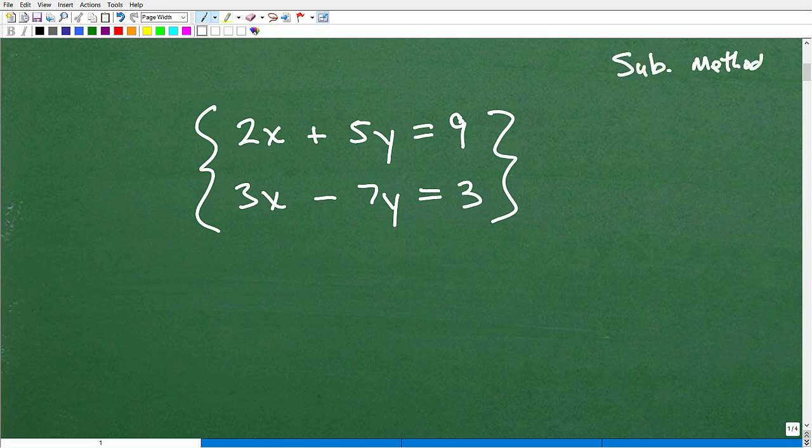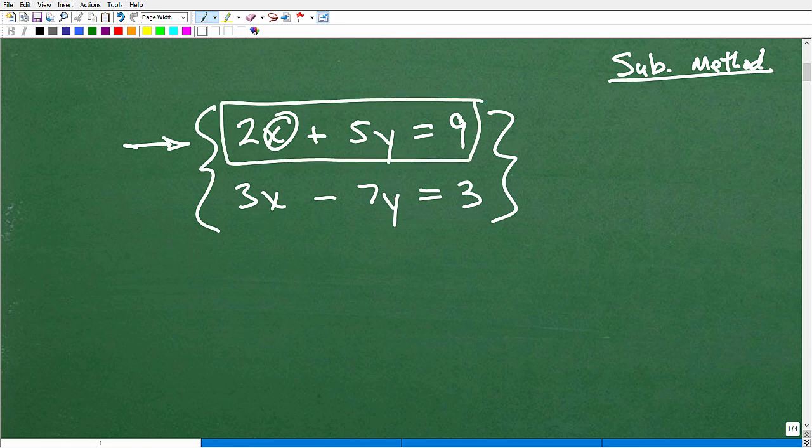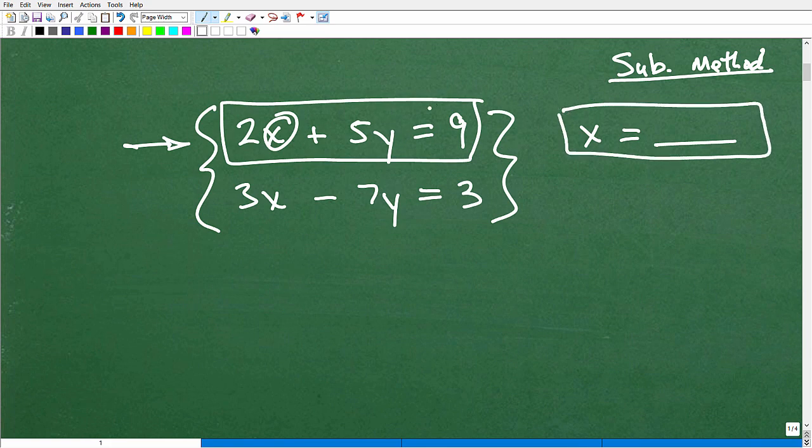But one of the ways we can solve this system is to use something called the substitution method. And the substitution method basically requires us to take one of these equations and solve for one of the variables. So, for example, I could take the first equation and solve for x, or I could solve for y or x down here or y down here. In other words, I have to take this equation and rewrite it such that it's going to say x equals whatever. And that's the skill that we're practicing in this particular video. And many students struggle with solving systems because they can't take this first step of solving for a particular equation.